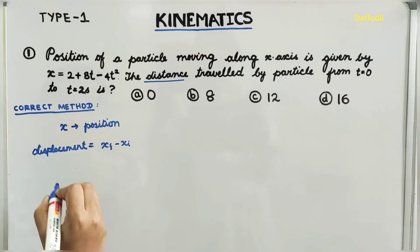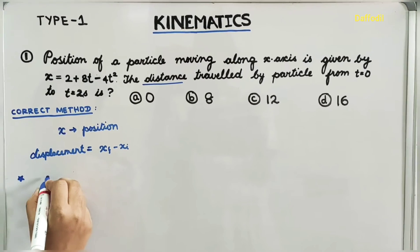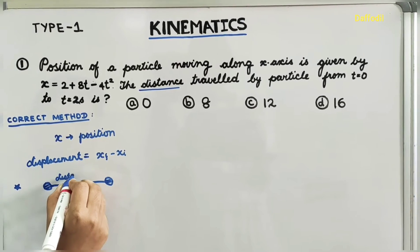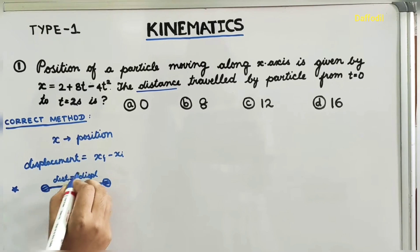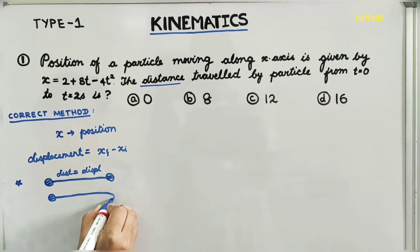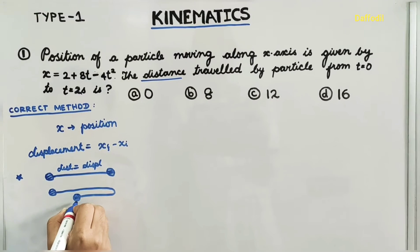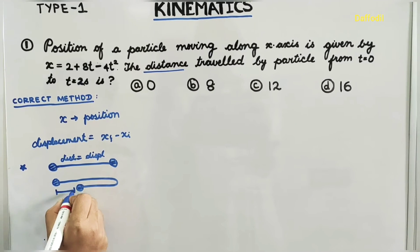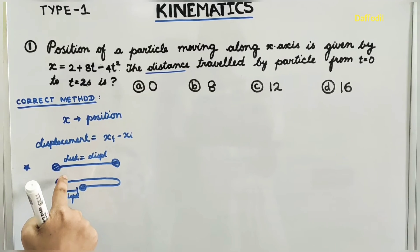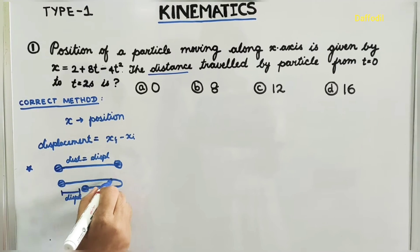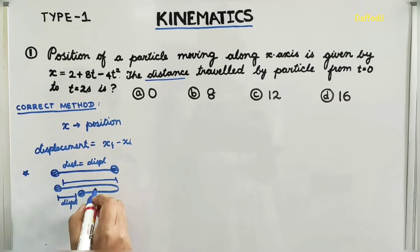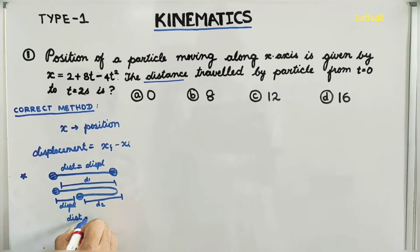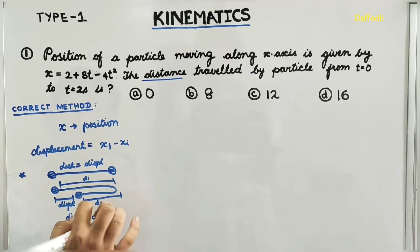To solve this correctly, understand the difference: if a particle moves in one direction without turning, distance equals displacement. But if the particle makes a U-turn, the displacement is final position minus initial position, while the distance is the actual path length — d1 plus d2 — the total path travelled.